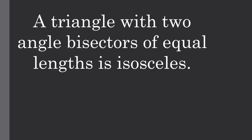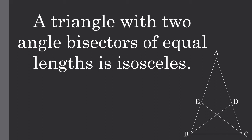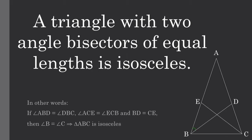Now to discuss the theorem in question: the Steiner-Lemus Theorem. The Steiner-Lemus Theorem states that a triangle with two angle bisectors of equal lengths is isosceles. In other words, in triangle ABC, if angle ABD equals angle DBC, angle ACE equals angle ECB, and line BD equals line CE, then angle B equals angle C, and therefore triangle ABC is isosceles.